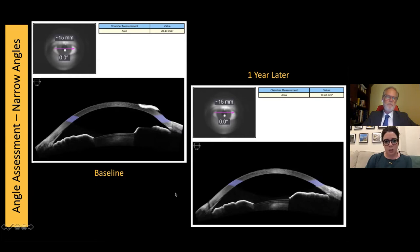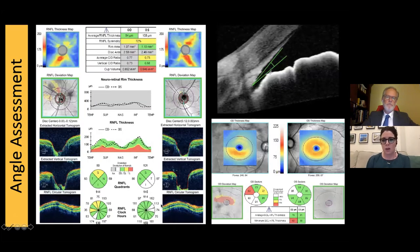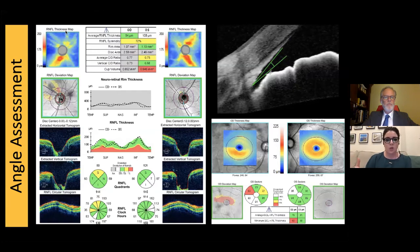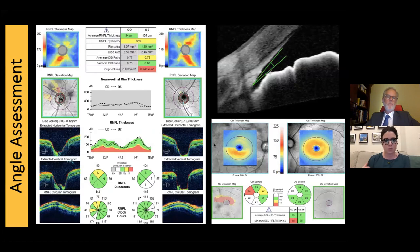Another important point with narrow angle patients: it's really important to run a nerve fiber layer and ganglion cell analysis on them. With this patient, running the nerve fiber layer reveals a big asymmetry between right and left overall average nerve fiber layer thickness. You can visualize significant superior nerve fiber layer thinning. We've gone from having this patient as a narrow angle suspect to proving she has nerve fiber layer damage, also seen in the ganglion cell analysis. She's now a chronic angle closure glaucoma patient.